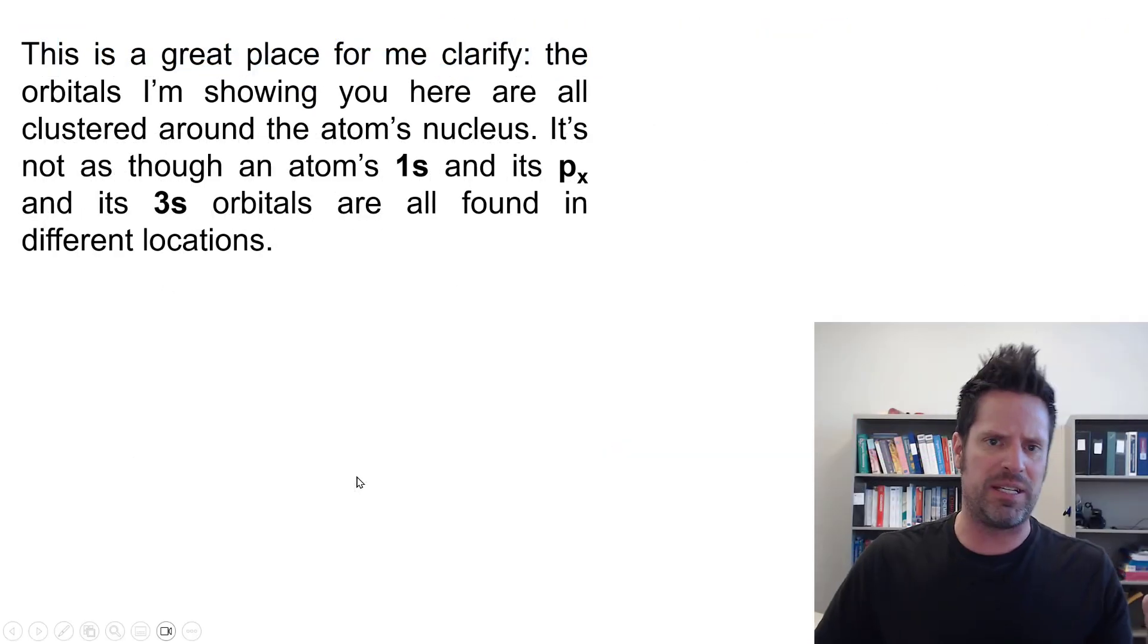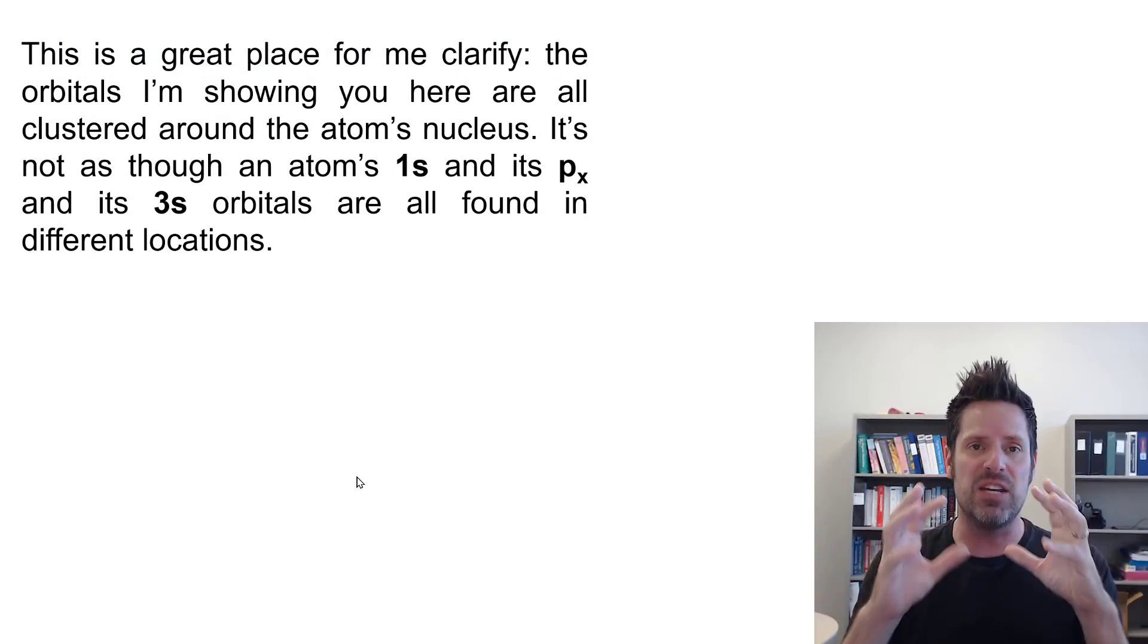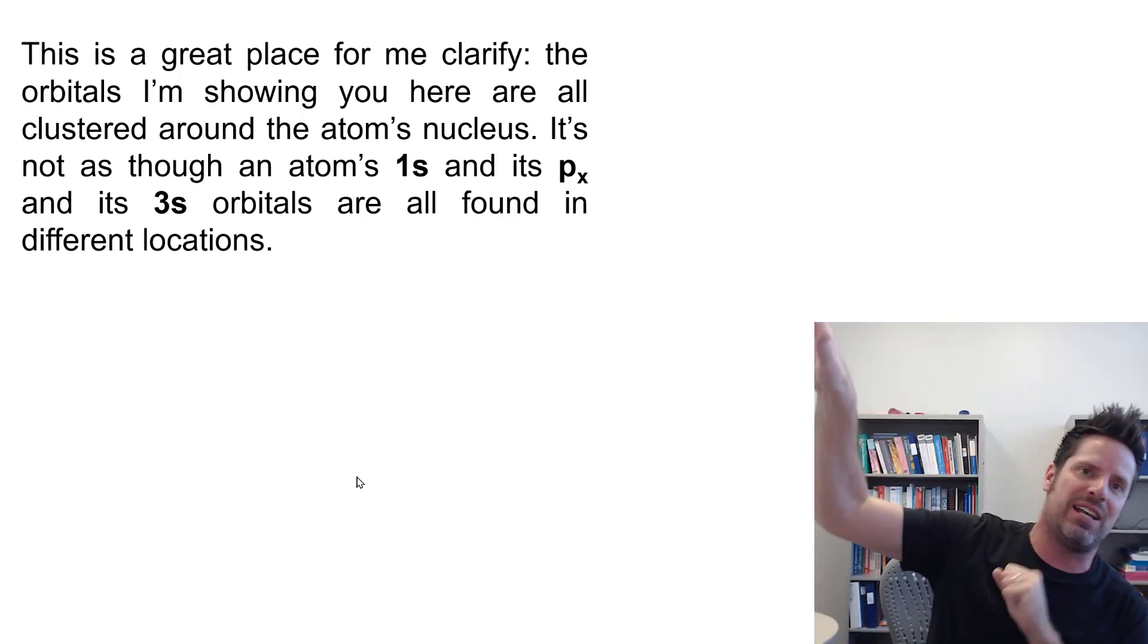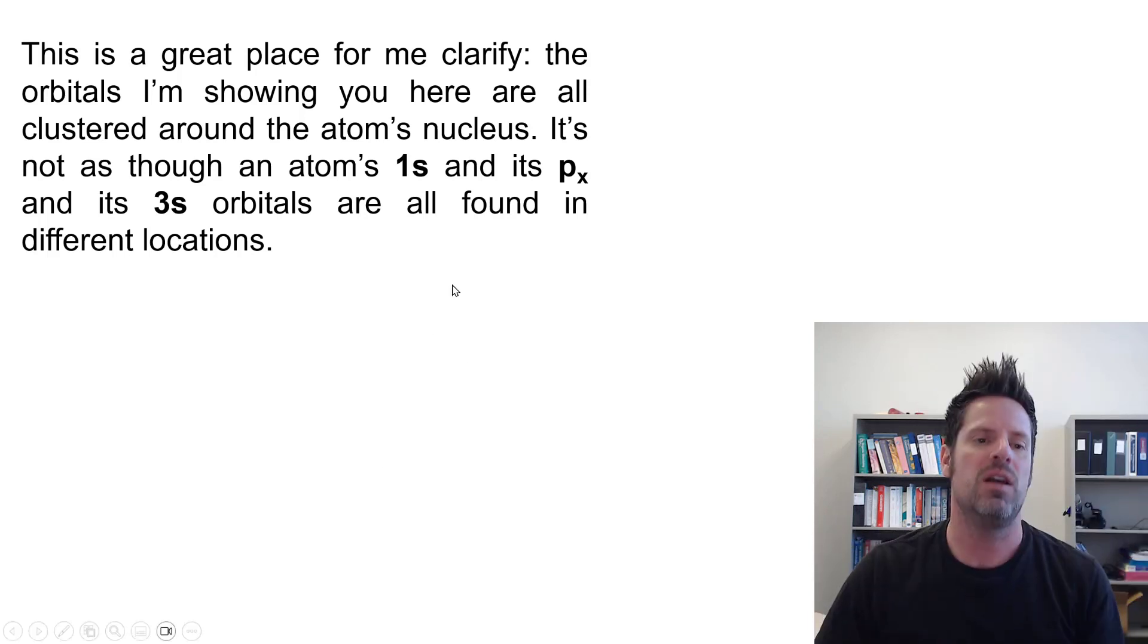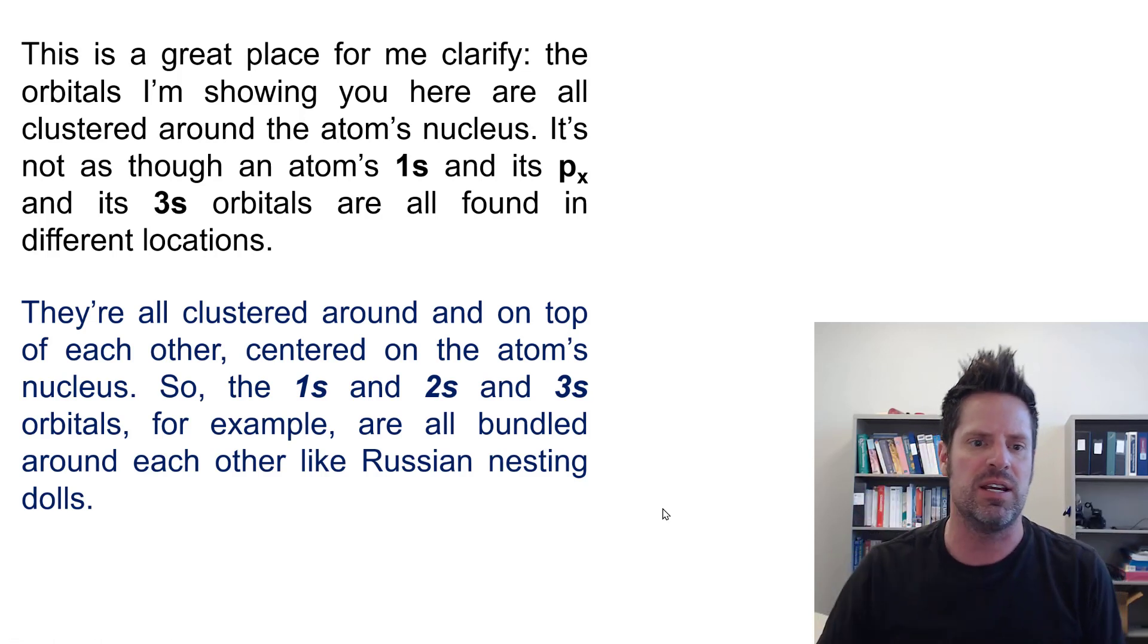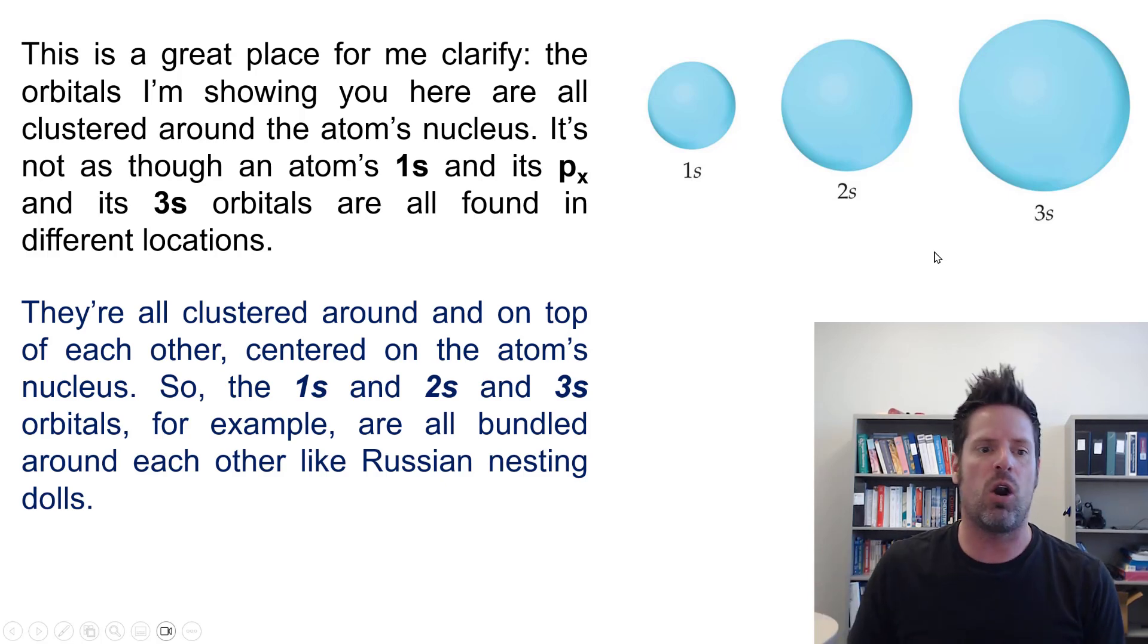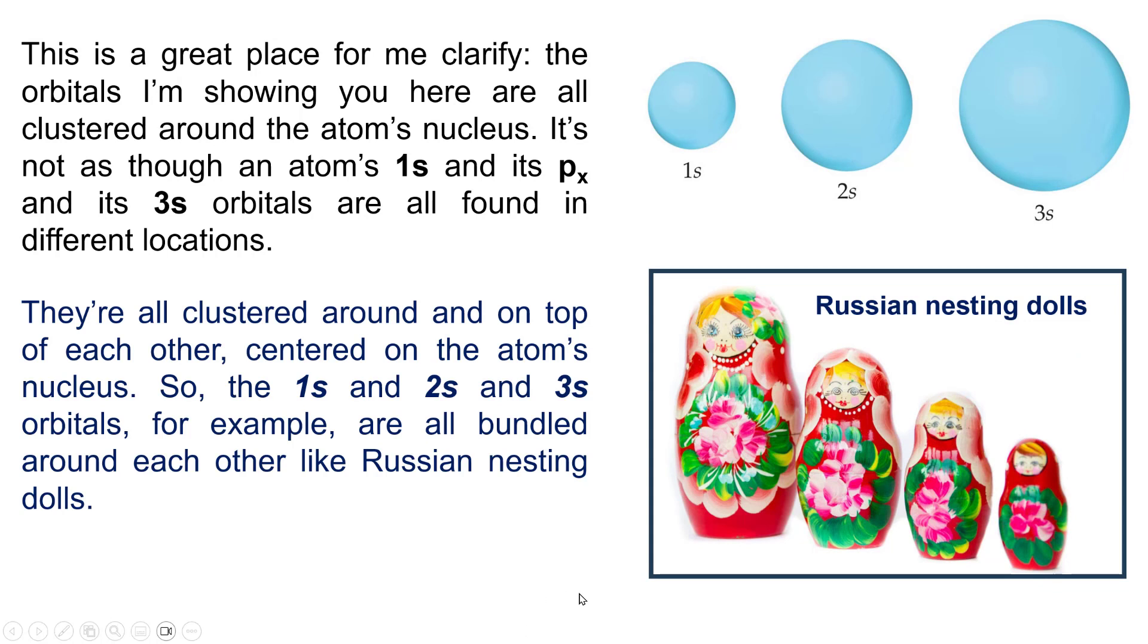Okay, so this is a great place for me to clarify. The orbitals that I'm showing you here are all clustered around an individual atom's nucleus. It's not as though an atom's 1s orbital, and its px, and its 3s, and its py, and all these other orbitals are all somewhere else separated from each other. They're all clustered around and on top of each other, centered on the atom's nucleus. So the 1s and 2s and 3s orbitals, for example, that I showed you earlier, are all actually bundled around and on top of each other, kind of like Russian nesting dolls. This video right here, that I'll link to in the description below and strongly invite you to watch, has a beautiful animation showing this.